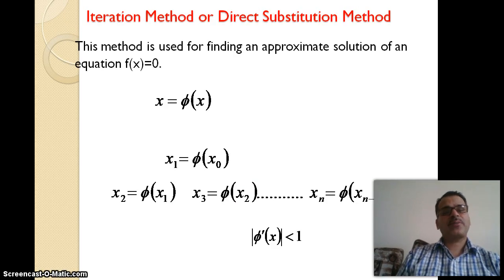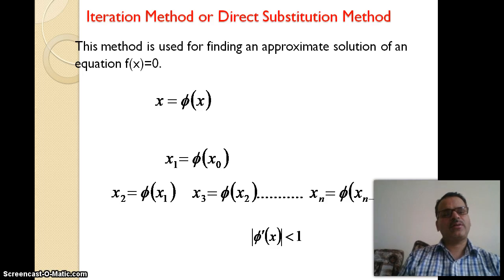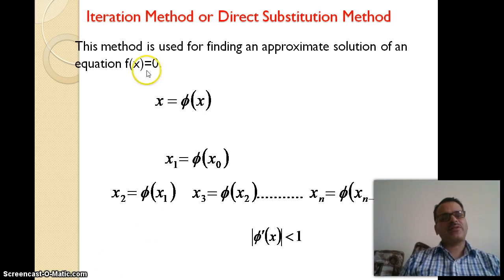Here we need an approximate value to start the solution. We don't find an interval. What we require is an approximate value, which need not necessarily be the exact root. This method is used for finding an approximate solution of f(x) = 0.